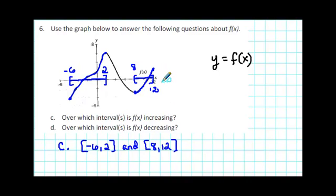For part D, over which interval is f of x decreasing? Well, decreasing means that the graph is going to be falling from left to right. We see that there's only one interval where that's true. The graph is falling from 2 to 8. So we'll put a bracket at 2, a bracket at 8, and shade in everything in between.